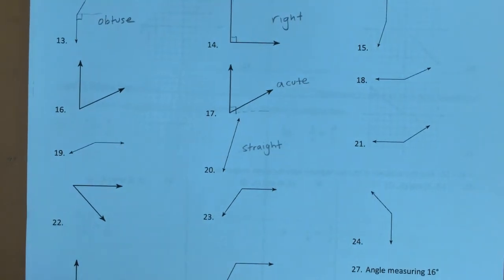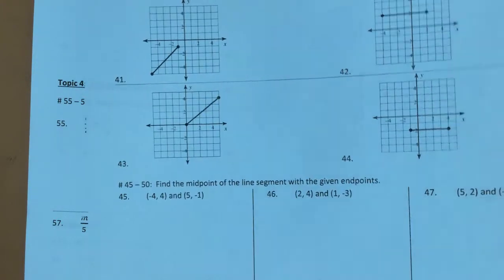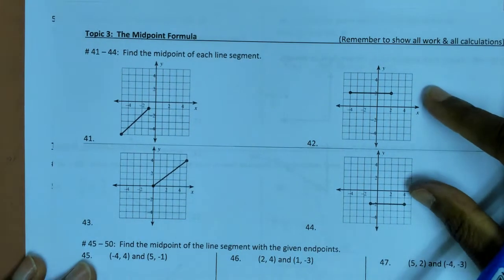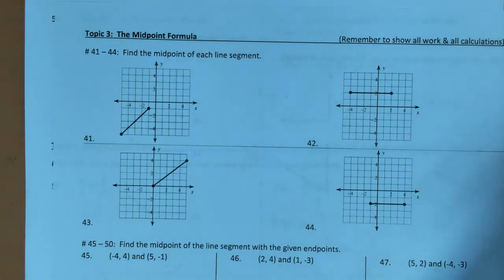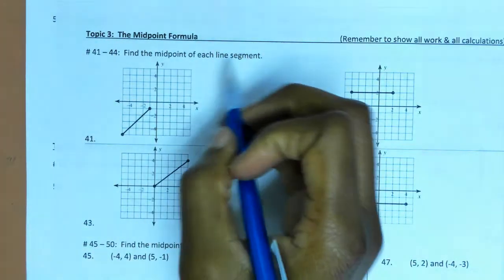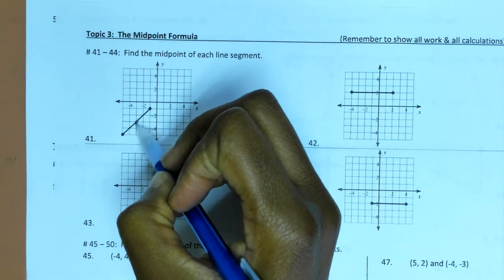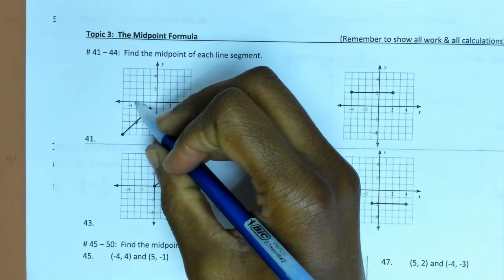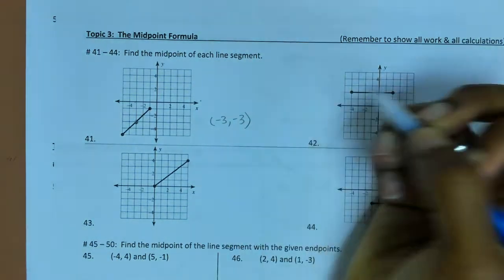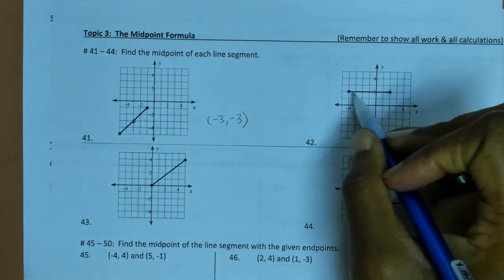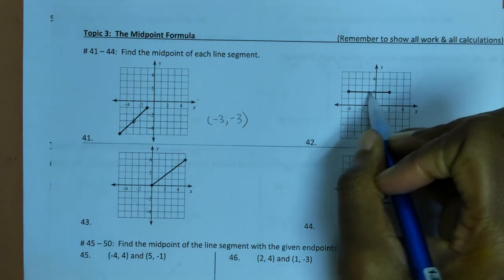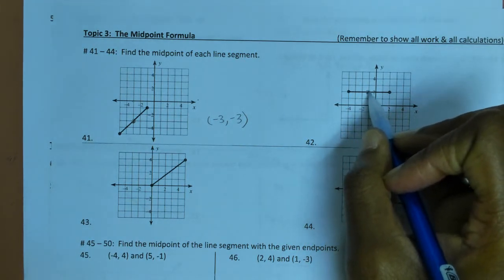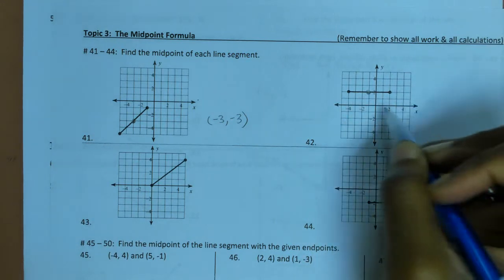Moving on to finding the midpoint of each line segment. For the graphs, you don't need to show work — you can look at the middle of the line segment pretty easily. The coordinates for the first one would be negative 3, negative 3. For the second, going 3 units from each endpoint meets at negative 1, 2 — that's my midpoint.